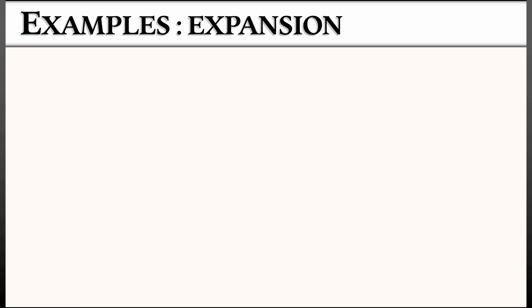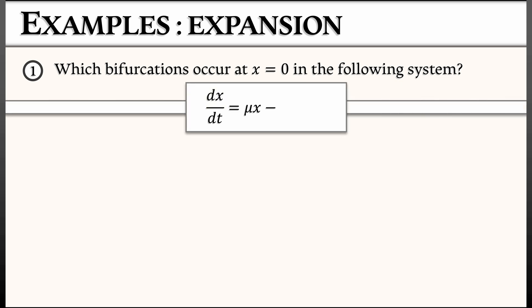Let's begin with a couple of examples. First of all, let's say I tell you that there's a bifurcation at x equals zero in the following system: dx/dt equals mu times x minus sine squared of 2x.